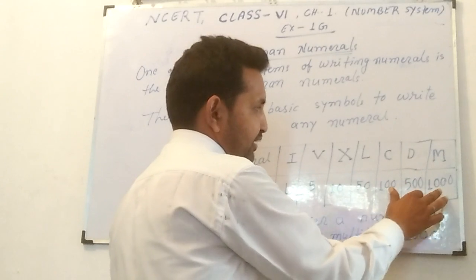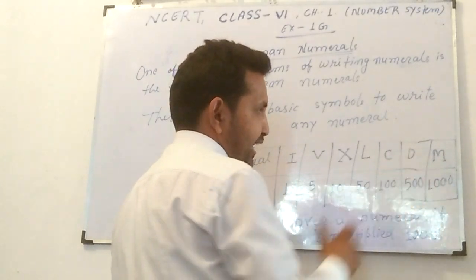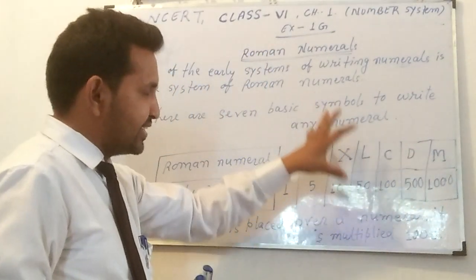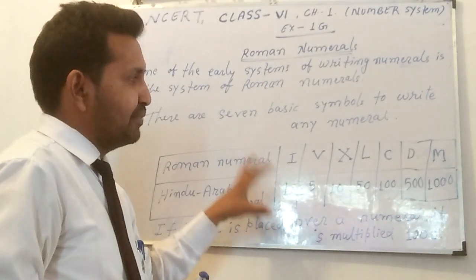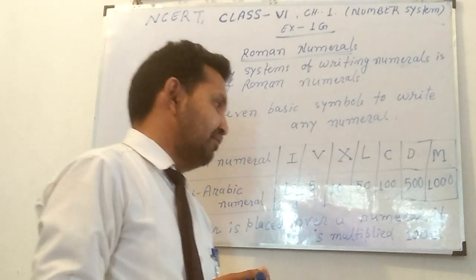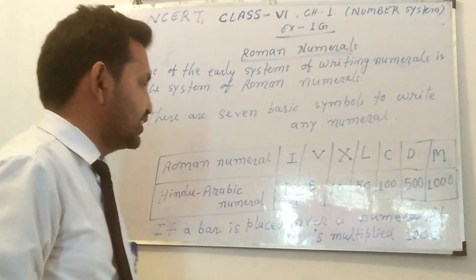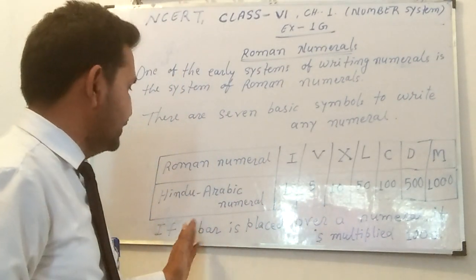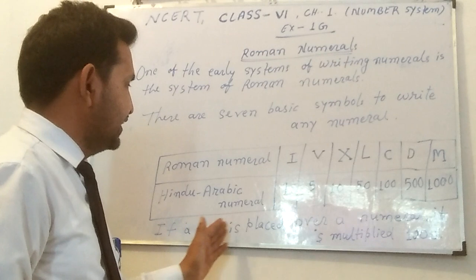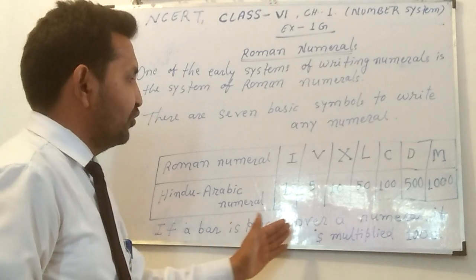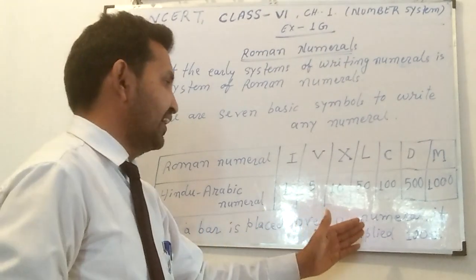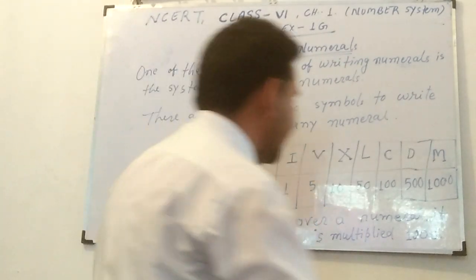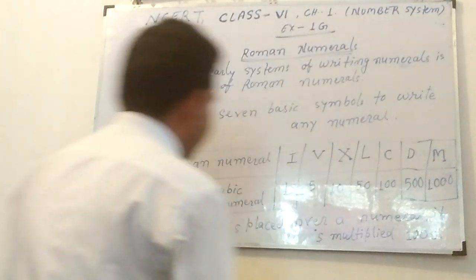The seven basic symbols are: I, V, D, and M, and so on. Now, if a bar is placed over a numeral, that numeral is multiplied by 1,000 times.